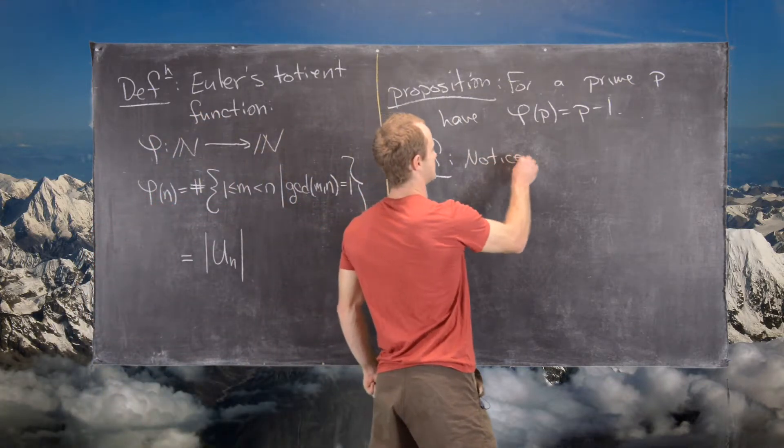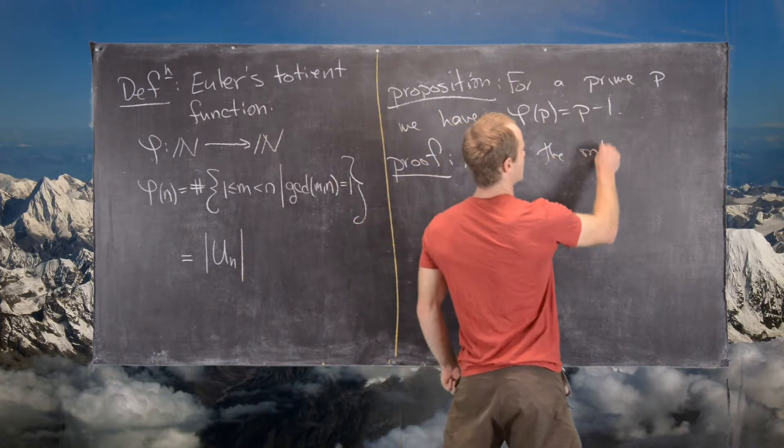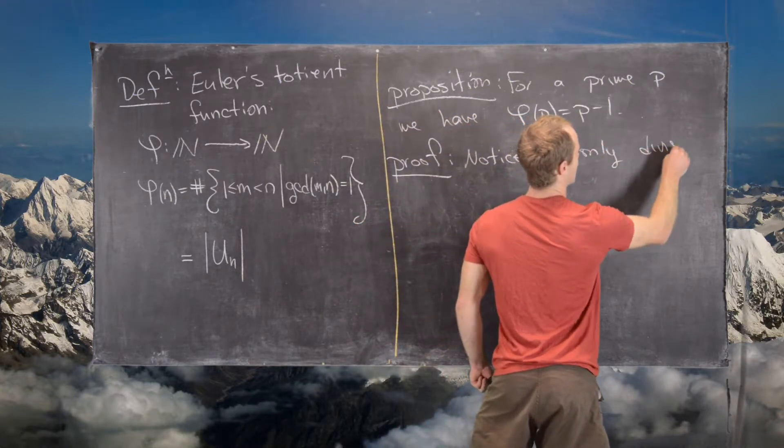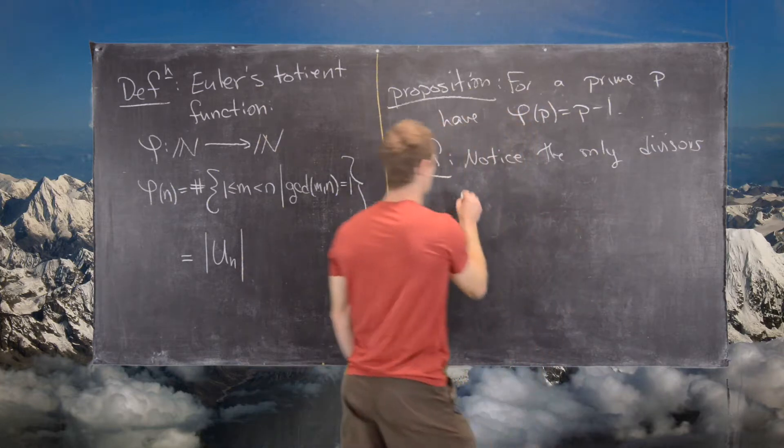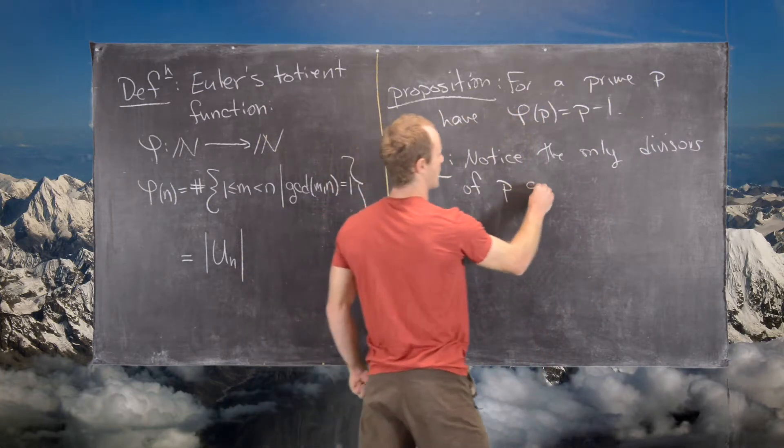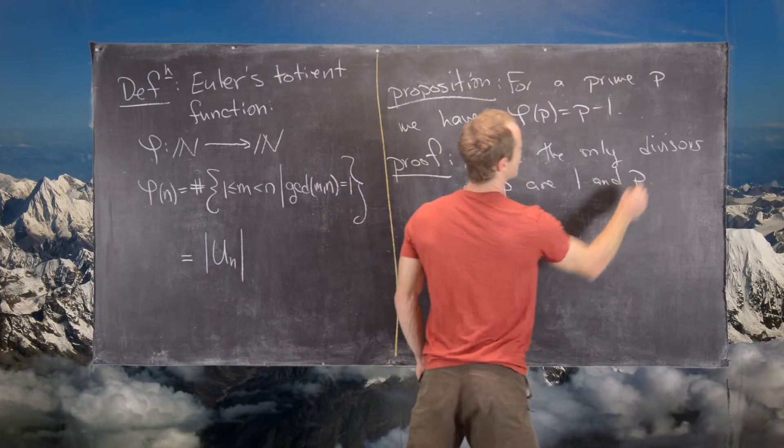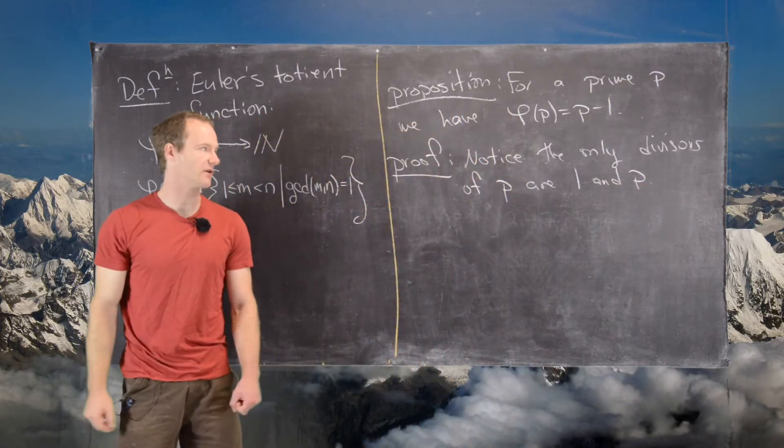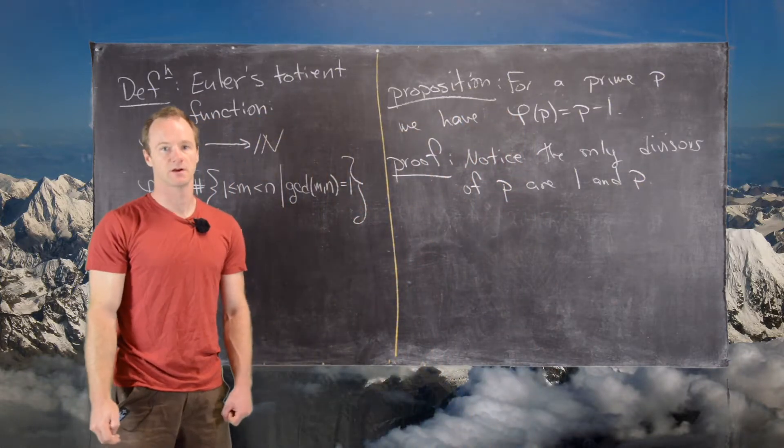So the proof goes as follows. So notice, the only divisors of P are 1 and P. So that's by the definition of a prime number.